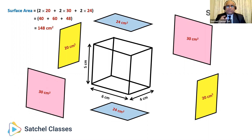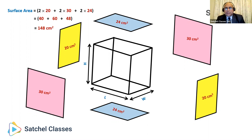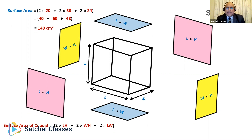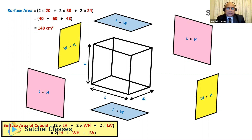Let's generalize. Replacing 5, 6, and 4 with L, W, and H — length, width, and height — the surface area of a cuboid is given by the formula: 2 times (length × height + width × height + length × width), which is 2(LH + WH + LW). Make a note of that formula — that's how we calculate the surface area of any cuboid.